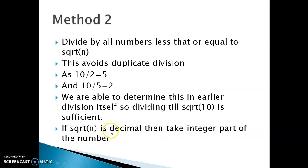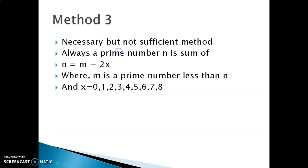Now these are two simple methods. Then we have the third method. This method says it is a necessary condition but not sufficient, so this is still in the proof arena. In this we say that a number n is a prime if it is a sum of a number m plus 2 times x, where m is also a prime number and x is any number from 0 to infinity.